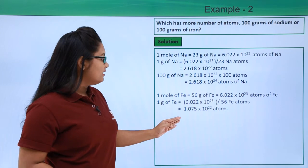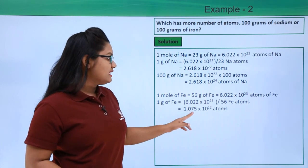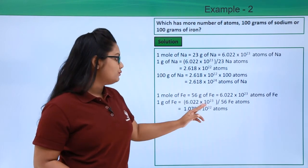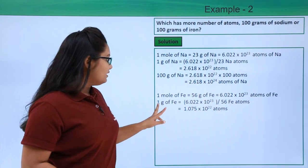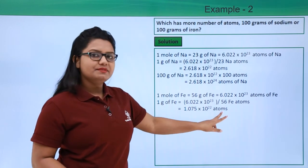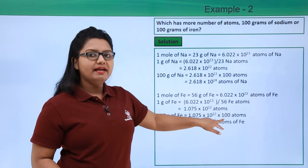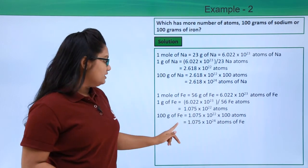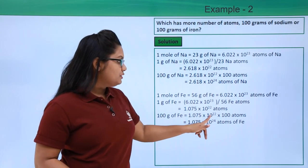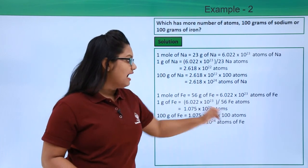So this calculation yields 1.075 × 10^22 atoms of iron. Since 1 gram of iron has these many atoms, 100 grams of iron must be having this number multiplied by 100 atoms, which yields 1.075 × 10^24 atoms of iron.